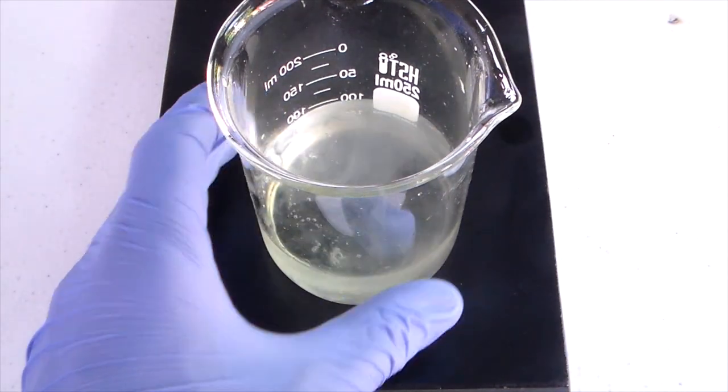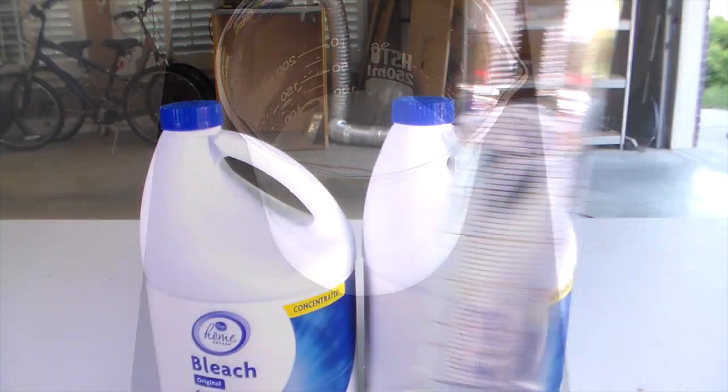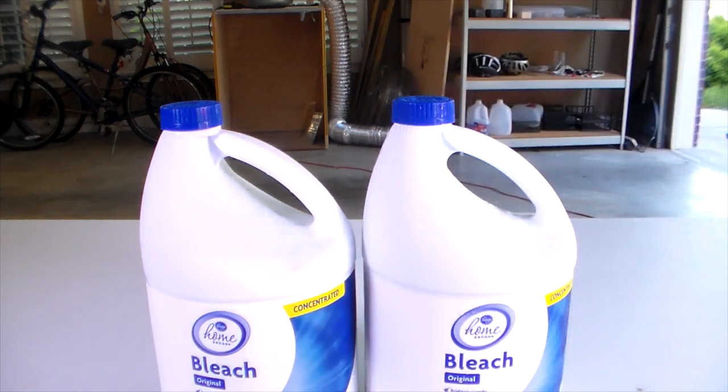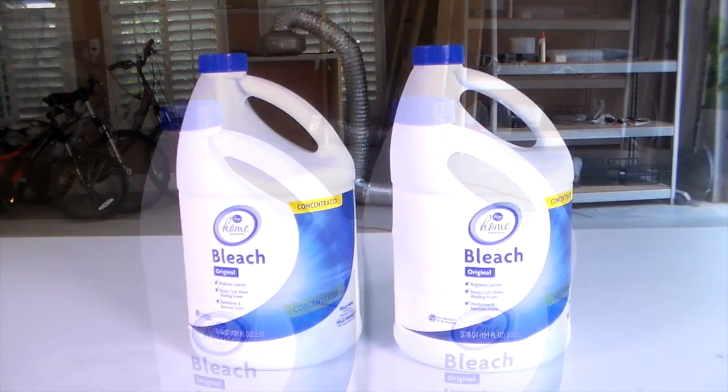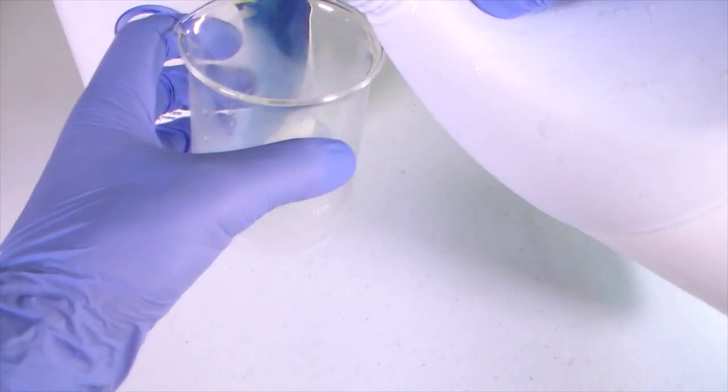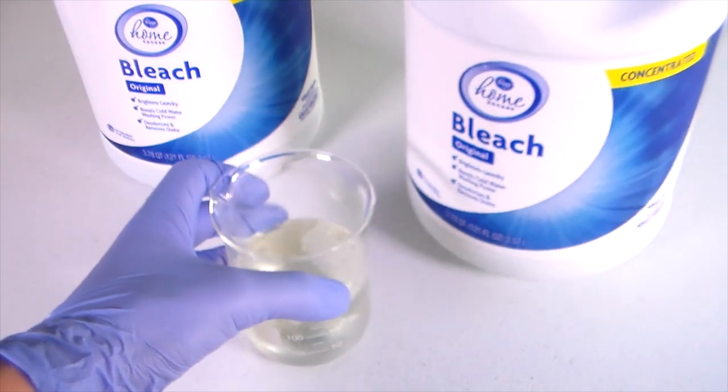This synthesis is actually fairly simple. All we need is bleach and any methyl ketone. I'm using acetone, but you could use methyl ethyl ketone or pretty much any other methyl ketone. I'm doing this on a 3 molar scale based on acetone, so I am using 2 liters of bleach. From each of the bottles, 150 milliliters of bleach is removed so that we have room to add the acetone.